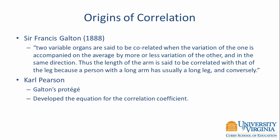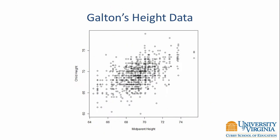It was his protege, Carl Pearson, who actually developed the equation that we use today for computing the correlation coefficient. Galton was interested in the study of heredity and collected a lot of data on anthropomorphic measurements, such as height and weight.